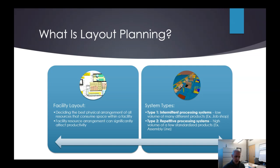It also matters what type of system we're trying to design. A system like a hospital is very different than designing a manufacturing process — those are different types of systems. We also have to look at whether it's an intermittent processing system, where we have very low volume but many different products, or something very repetitive with very high volume and a few standardized products. Those are very different system types to design for.